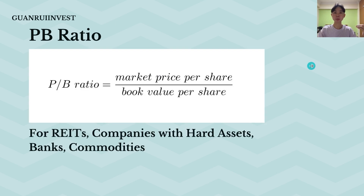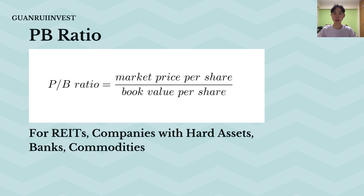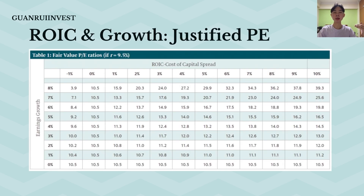Next is price-to-book. Price-to-book is the market cap of the company divided by the book value of the company. Your book value is basically the net worth of the company — assets minus liabilities. You normally use this ratio for commodities, real estate, banks, and companies with hard assets.